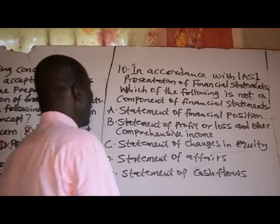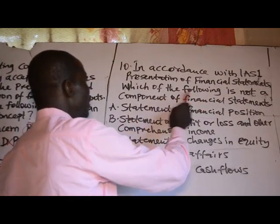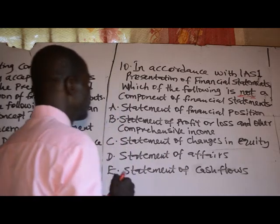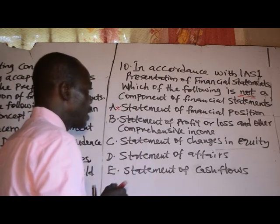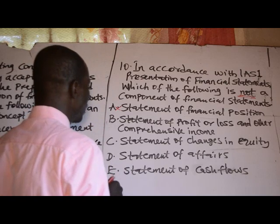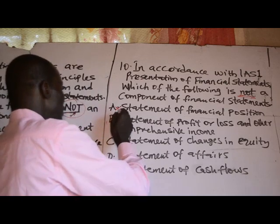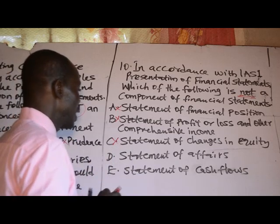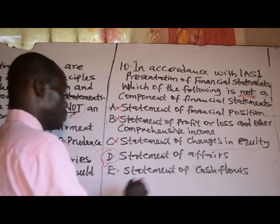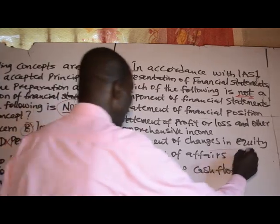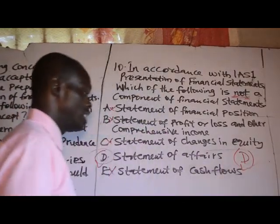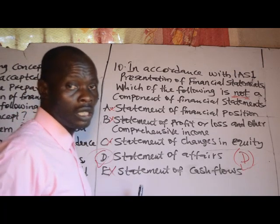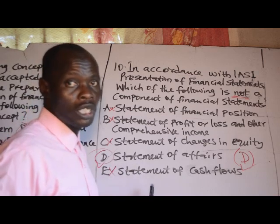Number ten: in accordance with IAS 1 Presentation of Financial Statements, which of the following is NOT a component of financial statements? Statement of financial position — is a component, not D. Statement of profit or loss and other comprehensive income — is a component, not B. Statement of changes in equity — is a component, not C. Statement of profit alone (option D) — this is not a recognized component. Statement of cash flows — is a component. Therefore the correct answer is option D. That concludes this presentation; my next video will examine the remaining questions. Thanks for watching.